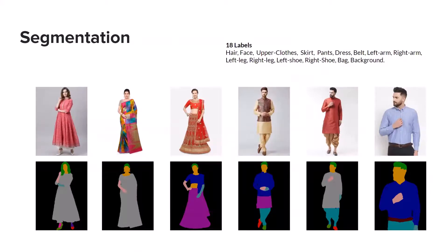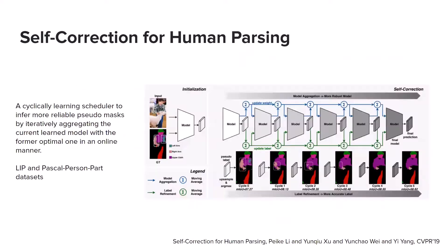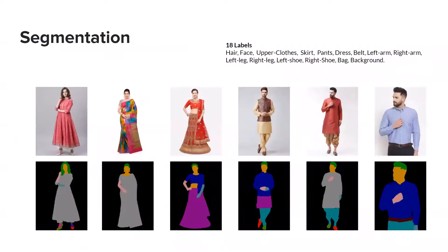For segmentation, we used a model called human segmentation parsing. This was a pre-trained model — we only provided our images and it gave the output; we did not re-train it. In that model, it already had 18 labels such as hair, face, upper clothes, skirt, and pants. Looking at our examples, you can see the segmentation is very clean — we can clearly identify the dress, hair, hands, legs, and shoes.